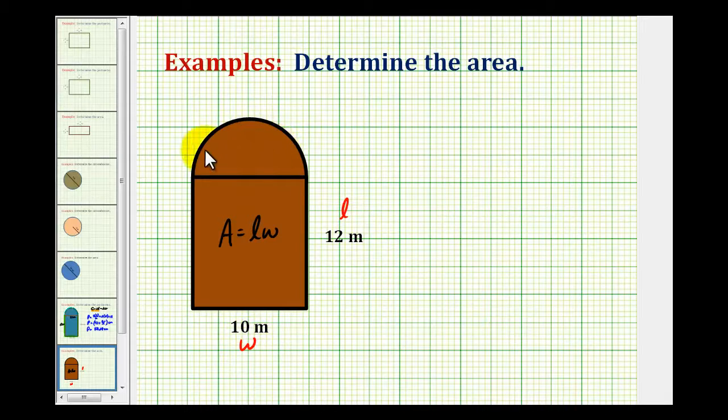Then to determine the area of half of this circle, we'll use the formula area equals pi r squared, where r is the length of the radius, but then we'll divide this by 2 because we only have half of the circle.